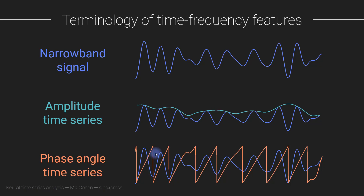We also get the phase angle time series, which tells you about the exact timing of a particular rhythm at a given frequency in the narrowband signal. I haven't really talked about phase yet — I'm going to start discussing phase in a few videos from now. This will also come back up when I talk about connectivity, because one of the dominant measures for measuring brain connectivity is phase synchronization. So these phase angle time series will become fairly important throughout the course.